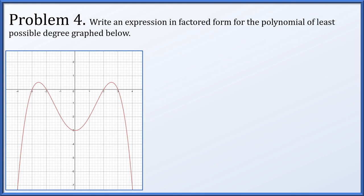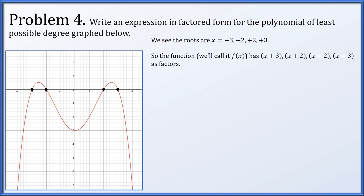In problem 4, we have the graph of a polynomial and want to write an expression in factored form. We find roots at x = −3, −2, 2, and 3. Therefore the function has factors (x + 3), (x + 2), (x − 2), and (x − 3), since plugging each root into its corresponding factor produces zero.